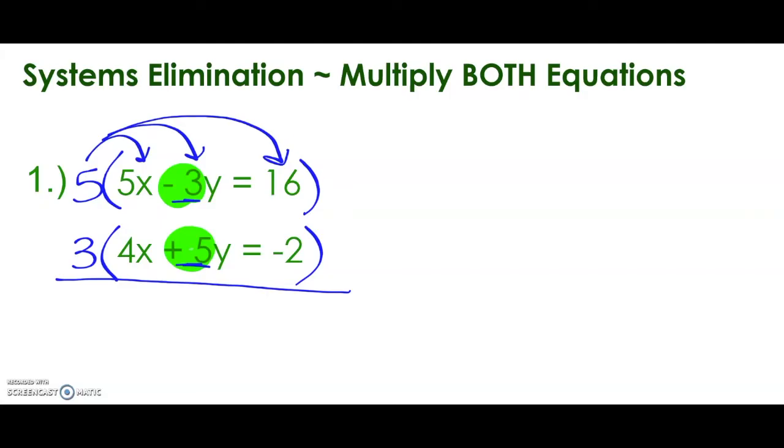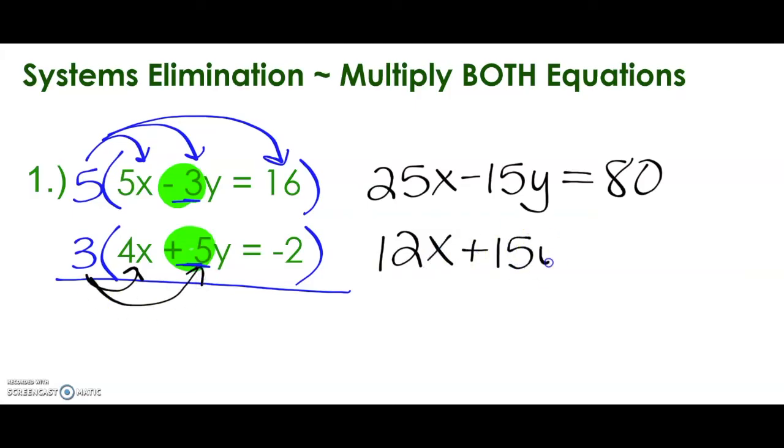So 5 times 5x is going to give us 25x. 5 times negative 3y is negative 15y. And then 5 times 16 is 80. Let's distribute the 3 to the bottom equation. 3 times 4x is going to give us 12x. 3 times 5y is positive 15y. There's your elimination. And then 3 times negative 2 is negative 6.